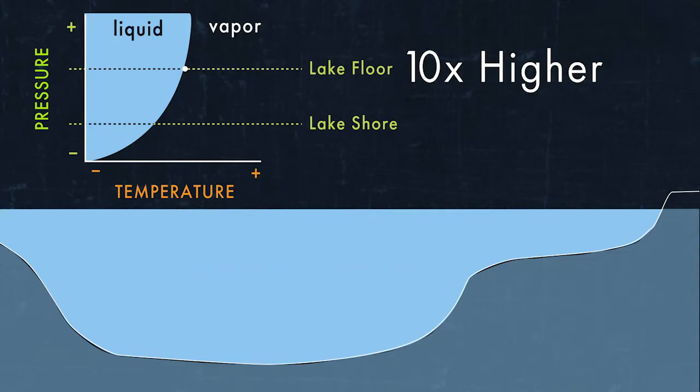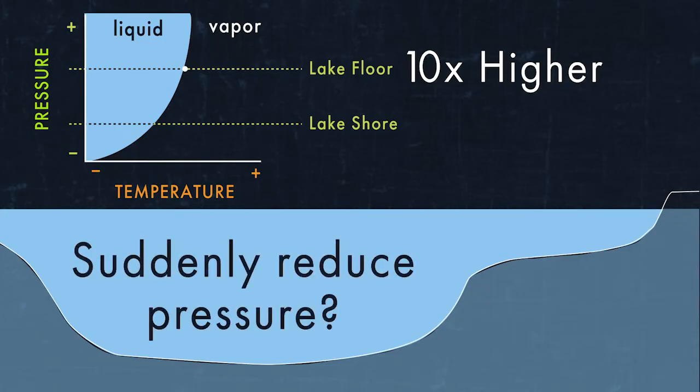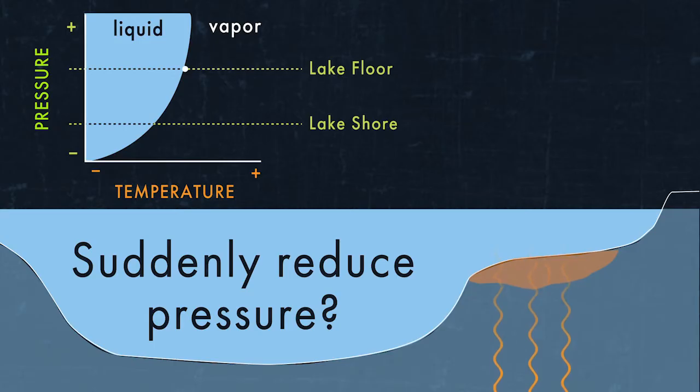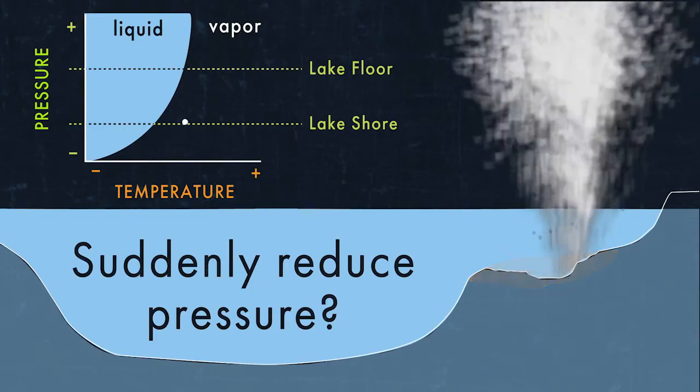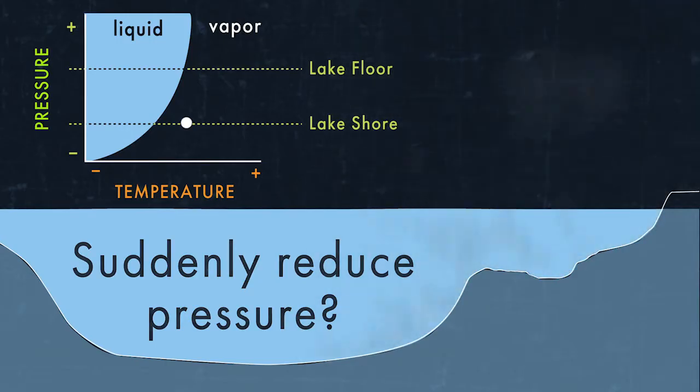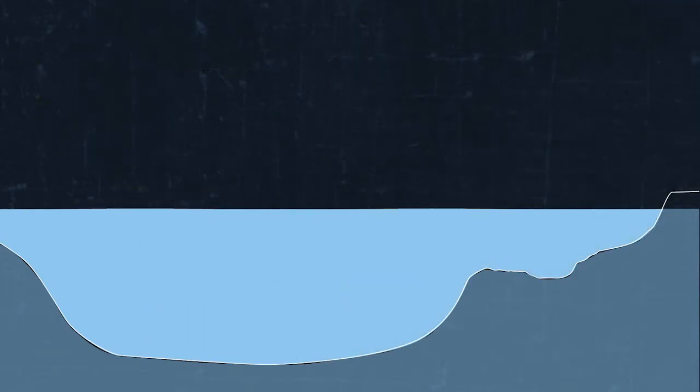What would happen if we suddenly reduced the pressure on the lake floor hot springs? The super hot liquids feeding the hot springs would instantly cross the phase boundary and flash to steam, causing a massive steam explosion and excavating a large crater on the lake floor. But what could cause a rapid pressure drop?